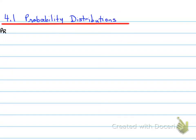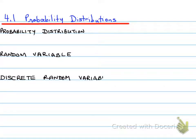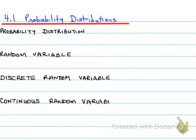What we're looking at here is some definitions. For example: probability distribution, random variable, discrete random variable, continuous random variable, and the definitions of each of these.